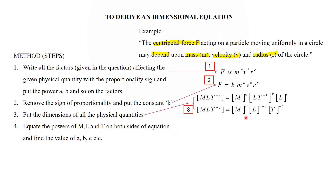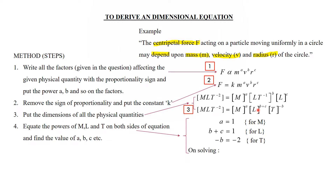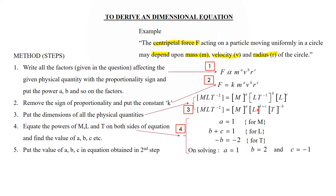Step four: equate the powers of M, L, and T on both sides. From M: a = 1. From L: b + c = 1. From T: −b = −2, so b = 2. Solving these gives a = 1, b = 2, and c = −1.